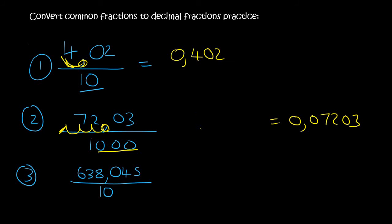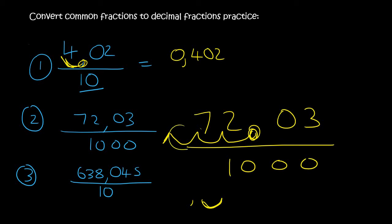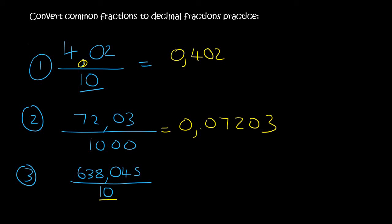Let me show you that one again. So you've got 72.03, and we're dividing by 1000. The comma is here and we're going to move it three places: 1, 2, 3. There's an empty space, then 7203. Inside the empty space put a zero, and if there's nothing in the front you can also put a zero. So your answer is 0.07203. For the next one we have a 10 at the bottom, so the decimal must move once, giving us 63.8045.